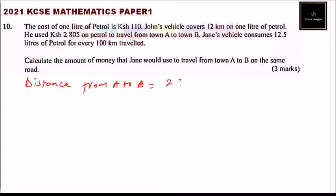He used 2,805. The cost of petrol is 110. So we get how many liters of petrol. And for every liter, John's vehicle was covering 12 kilometers. And when you multiply that, you use your calculator.